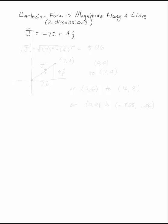Change the vector j in Cartesian form into a magnitude along a line. The first thing you need to find is the magnitude of j, which you can do using the Pythagorean theorem. Square each of its components and take the square root.